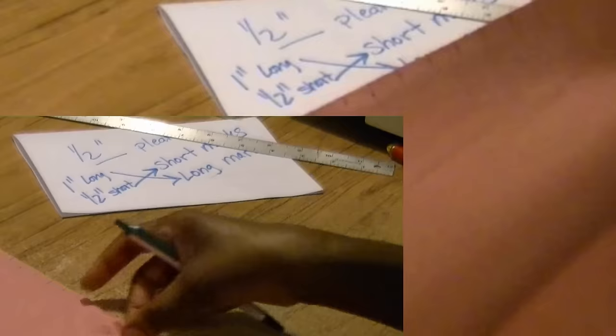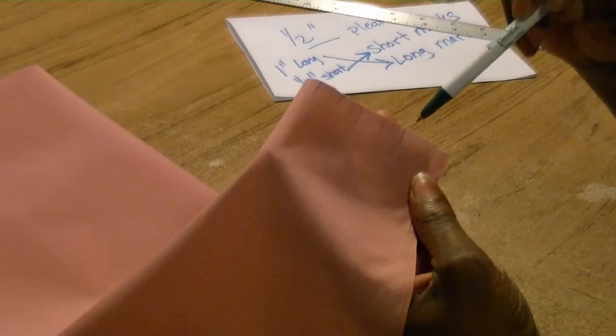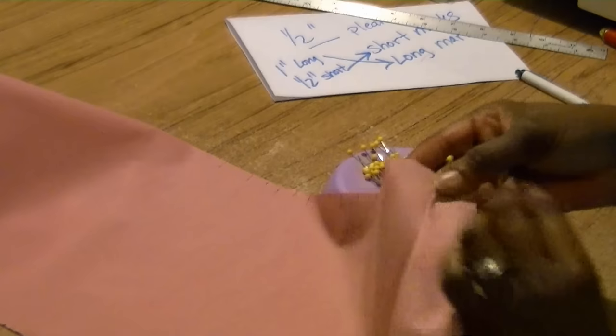This is what the fabric looks like once all the marks have been done. Now we're ready to start pleating. To make your pleat, you're going to take a long mark and match it up with the second short mark. Using a pin, you want to secure the pleat so that it doesn't come loose.